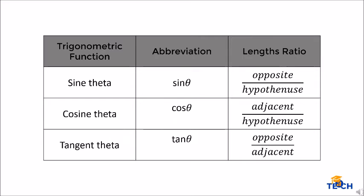Now that we know about the right triangle, let us discuss the trigonometric functions. We have three primary trigonometric ratios or functions: sine theta, cosine theta, and tangent theta. The length ratio depends on your angle of interest, so let's see them one by one.